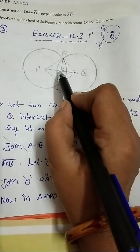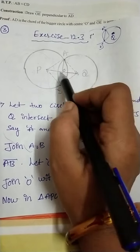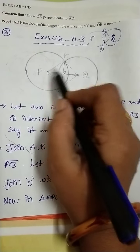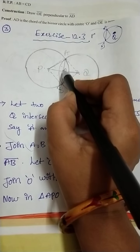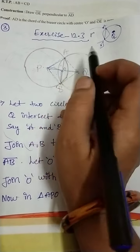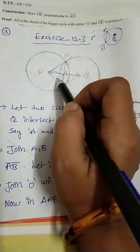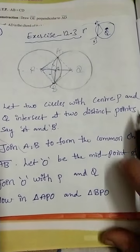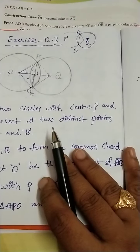After joining, you will get triangles here. Triangle AOP and triangle BOP are the two triangles — see it properly, this is one triangle and this is one triangle.